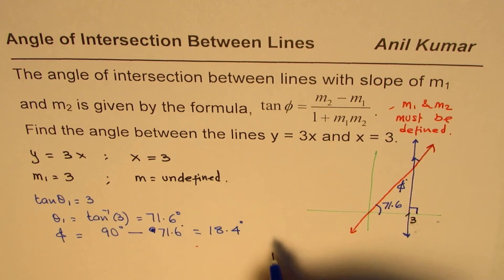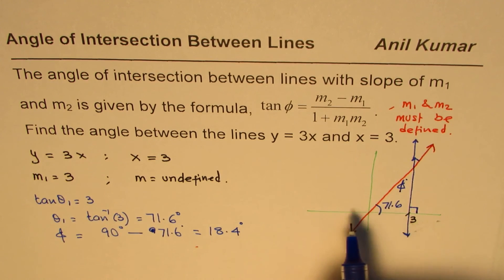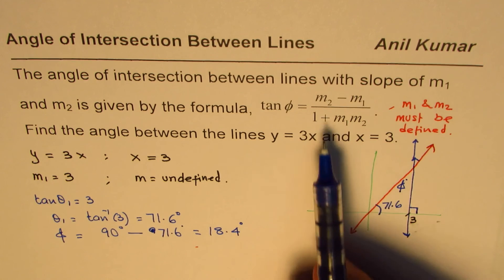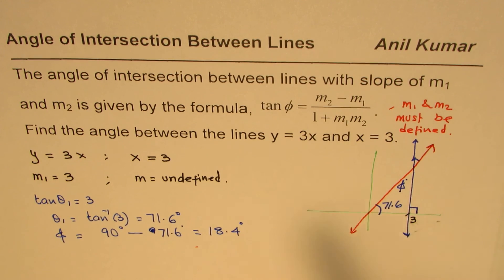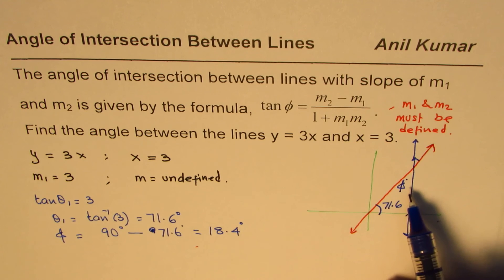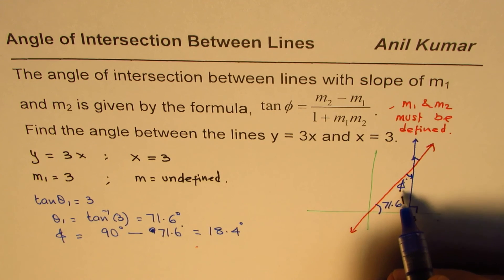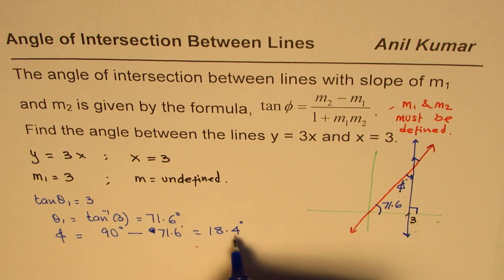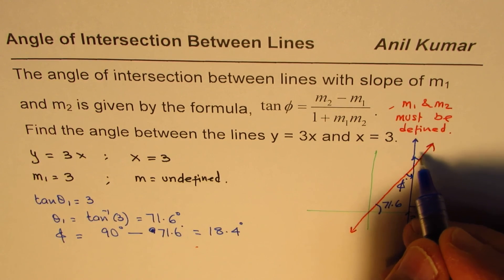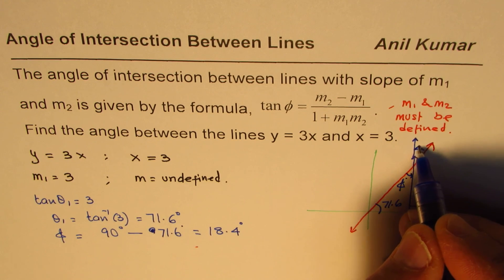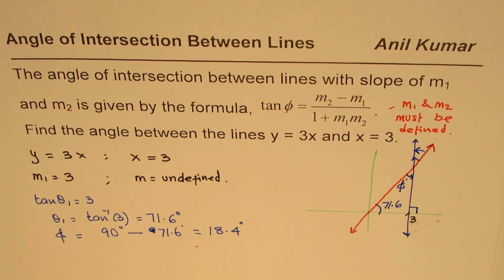So the idea here is, in case you have a vertical line, you should not be using this formula. You can actually find the complement of an angle, which you have already done. So the angle between these two lines will be 18.4 degrees. So normally when we say angle, we are normally finding the acute angle being measured counterclockwise. So that is this angle.